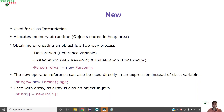Apart from this, the new keyword can be used directly in an expression — that is, instead of a class reference variable, we can directly use the new keyword to allocate the value to some variable in the class. It is also used for array initialization because an array is also an object. So this was all about the new keyword; now let us move to the next keyword, which is static.